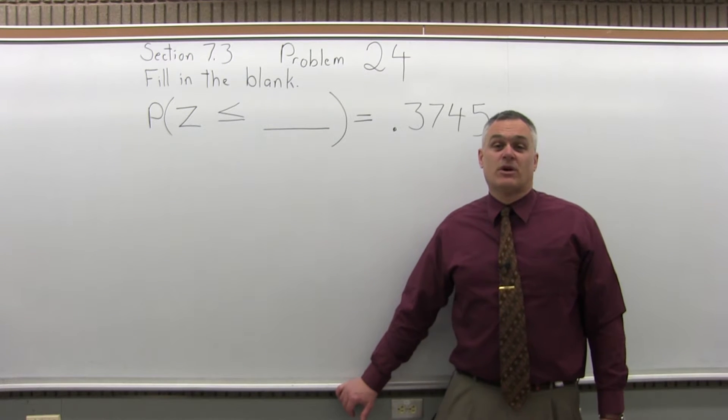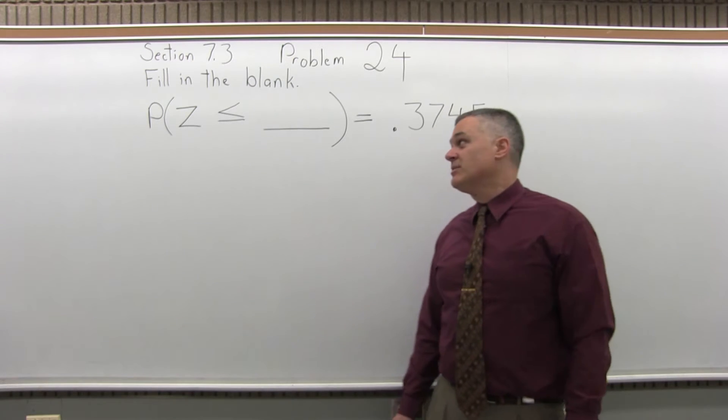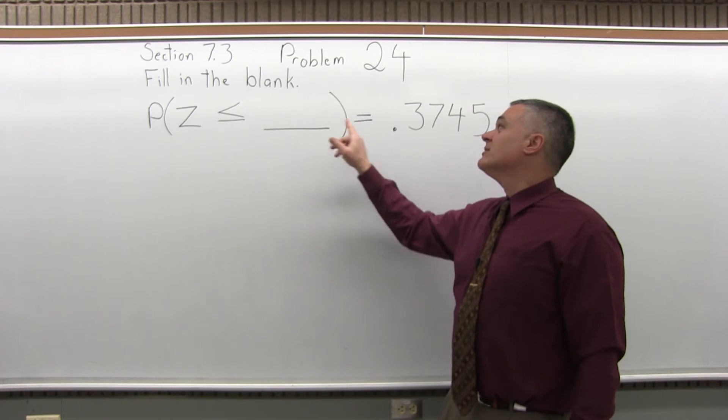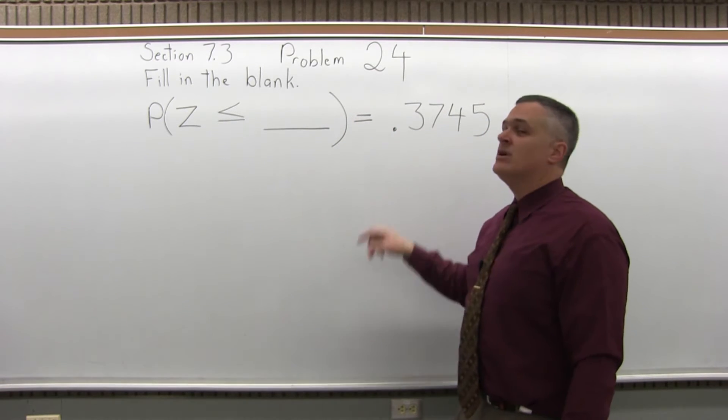This is Section 7.3, Problem number 24. It says fill in the blank, the probability that Z is less than or equal to blank equals .3745.